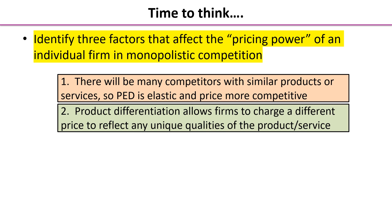However, point two: because firms have some product differentiation, they can charge a different price that reflects the particular qualities of their product or service. That doesn't necessarily mean they charge a higher price — it may be that their unique qualities appeal to a market with a lower disposable income, and they want to charge a lower price to reflect that.